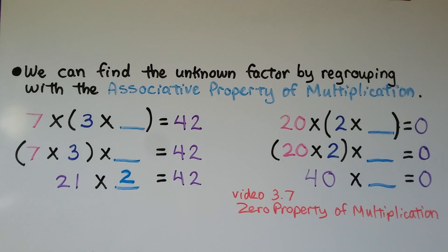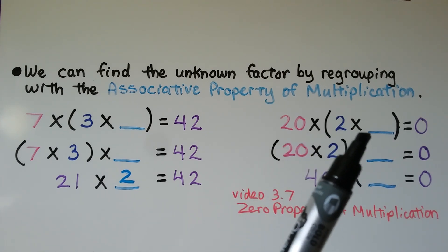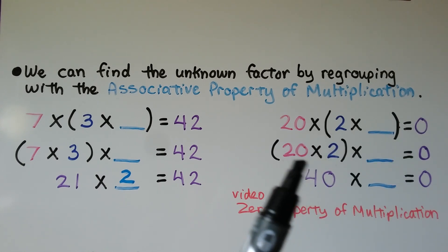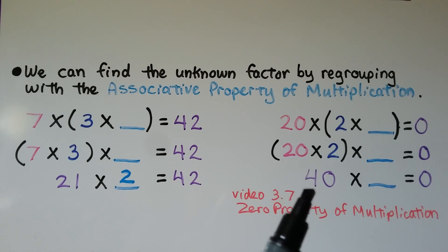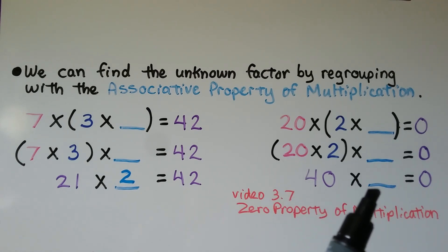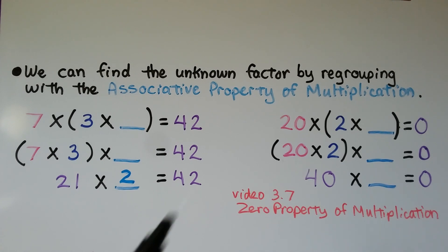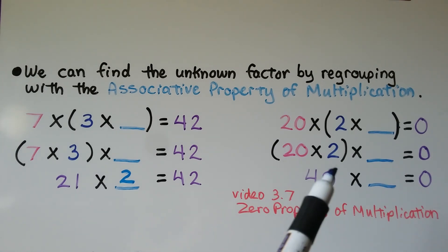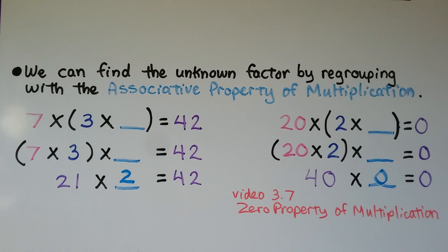By regrouping the factors, it helped us find the unknown factor. For this one: 20 times 2 times some number equals 0. We regroup 20 times 2, which equals 40. Now we have 40 times an unknown factor equals 0. Remember from chapter 3, lesson 3.7 — the zero property of multiplication says the product of zero and any number is zero. So the unknown factor must be 0; 40 times 0 equals 0.